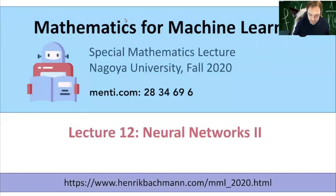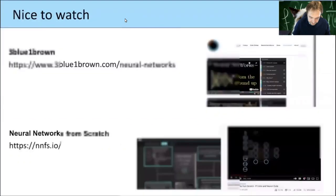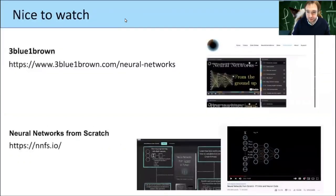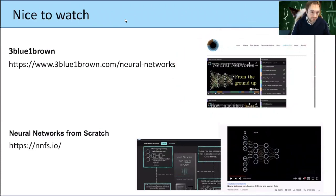Welcome to lecture 12. Today we will continue talking about neural networks. As I mentioned last time, there are two nice sources for having an overview — in particular, the videos by 3Blue1Brown. I hope some of you had a look, because in this video lecture he also explains roughly what we will do today: backpropagation to calculate the gradient for the cost function of a neural network.